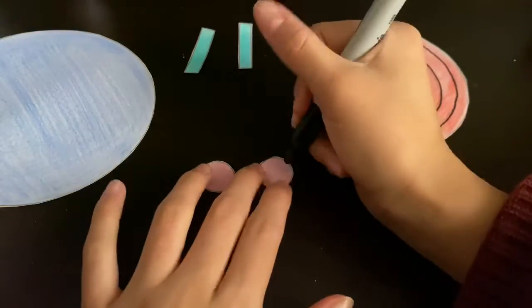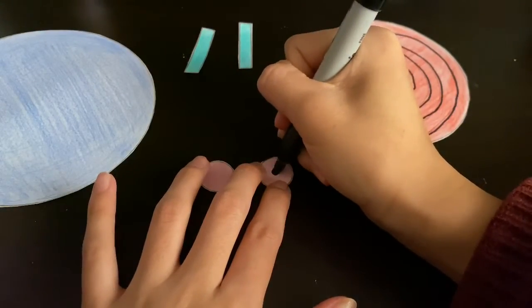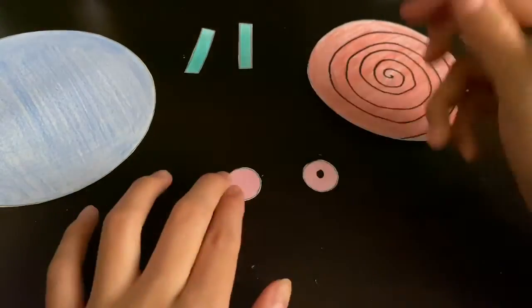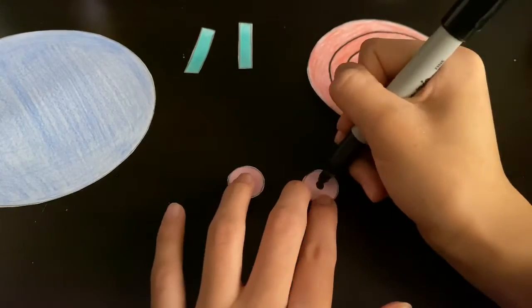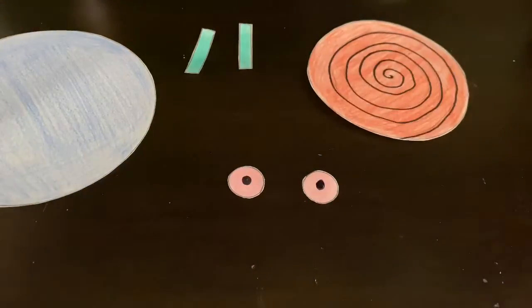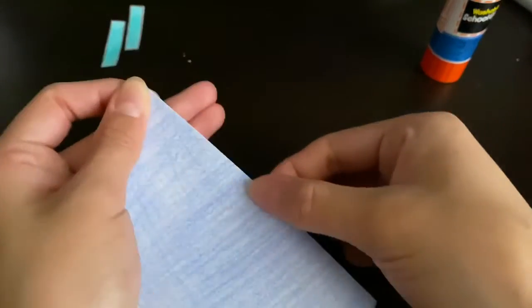Now we're gonna grab our two small circles and we're gonna make them into eyes for the snail. Now we're gonna grab our big circle and fold it in half.